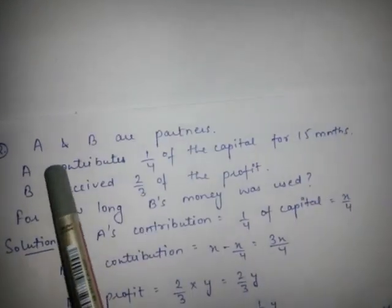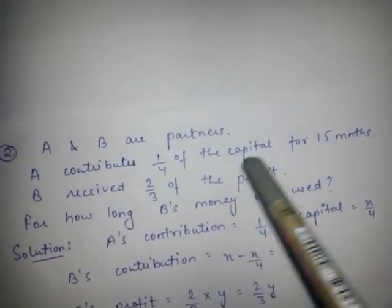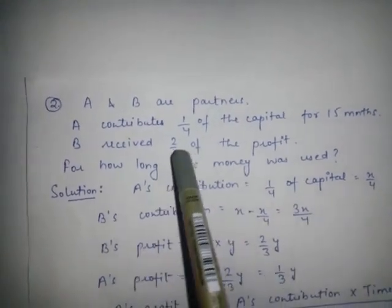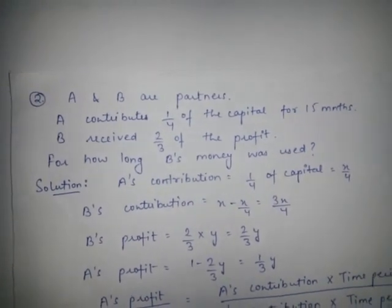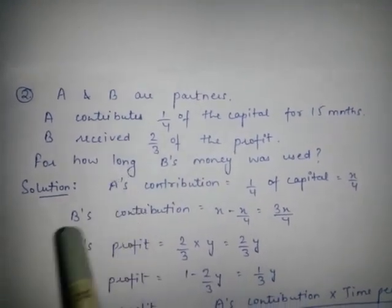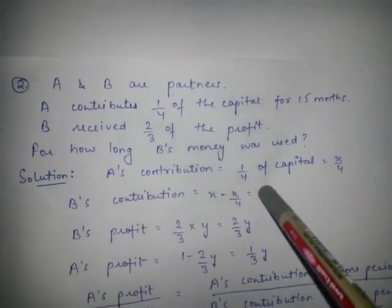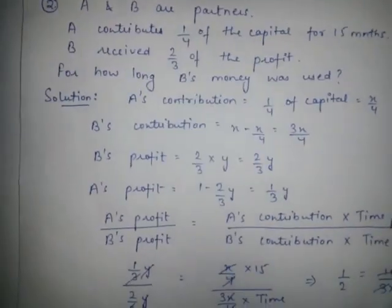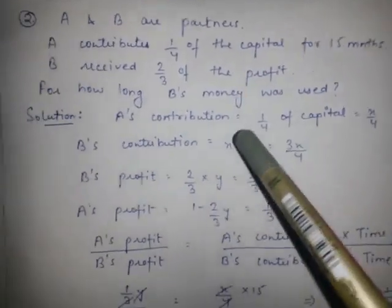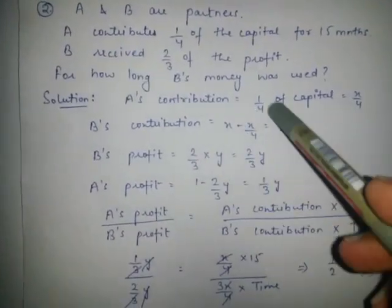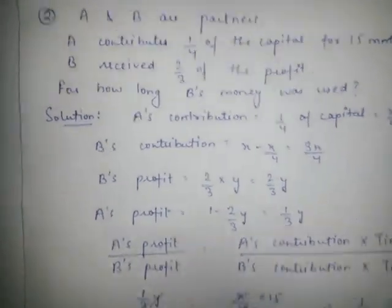Let's come to another numerical. We have partners A and B. A contributes 1/4 of the capital for 15 months, and B receives 2/3 of the profit. We need to calculate for how long B's money was used. We apply the second rule. Suppose total capital is X and total profit is Y. B's contribution is the total capital minus A's contribution, which gives 3X/4.